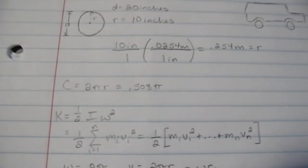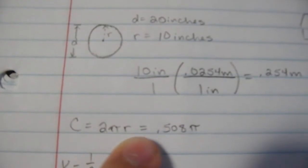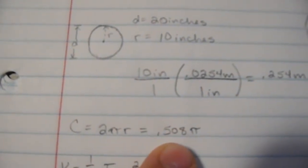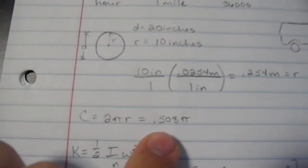Now, this wheel has a circumference. Circumference is 2πr, so the circumference, without multiplying pi into that, just to keep it simple for now, it's 0.508. This is understood to be meters.